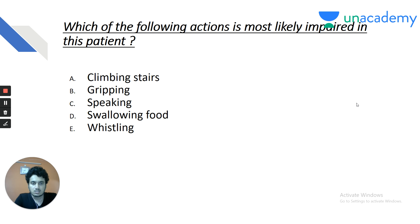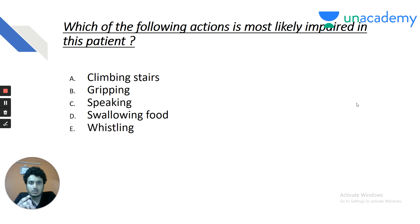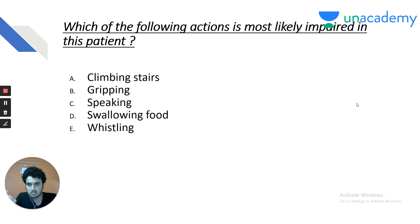Which of the following actions is most likely impaired in this patient? Not only identifying the vascular cause or the anterior cerebral artery involvement is sufficient. You must know what happens when the anterior cerebral artery is infarcted. Options: A — climbing stairs; B — gripping; C — speaking; D — swallowing; E — whistling.